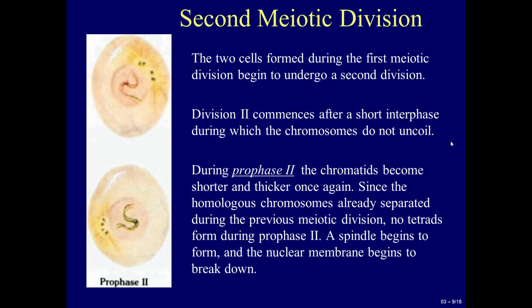The second meiotic division: the two cells formed during the first meiotic division begin to undergo a second division. Division two commences after a short interphase, during which the chromosomes do not uncoil. During prophase II, the chromatids become shorter and thicker once again. Since the chromosomes already separated during the previous meiotic division, no tetrads form during prophase II. A spindle begins to form, and the nuclear membrane begins to break down.